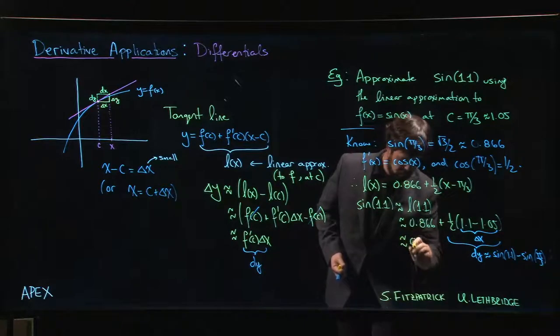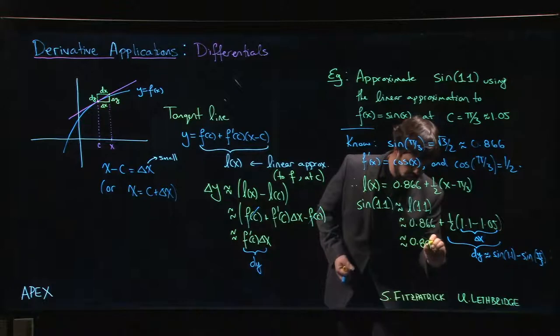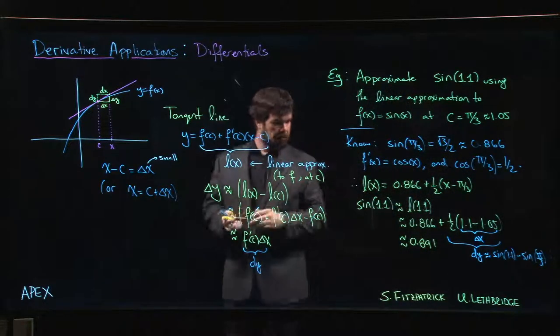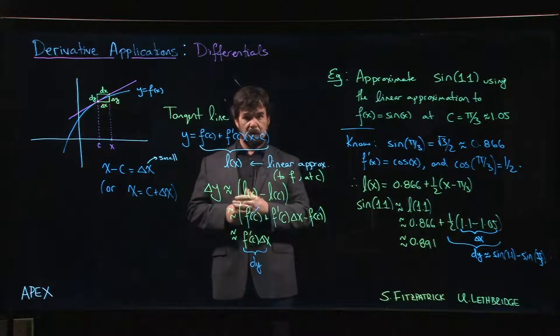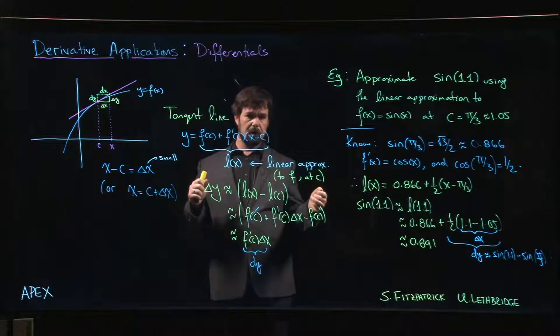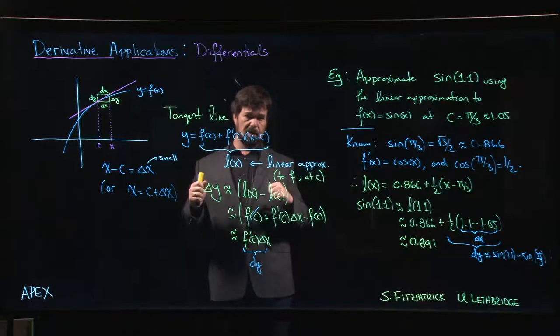Okay, so that's our actual value, 0.891. And if you do happen to have a scientific calculator handy, feel free to punch sine of 1.1 in, make sure you're in radians mode, and see how close you get. I bet you're not too far off.